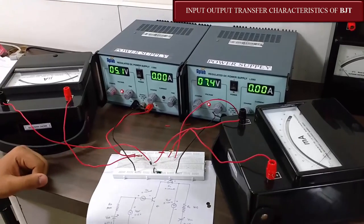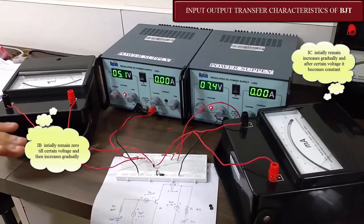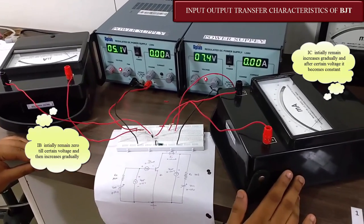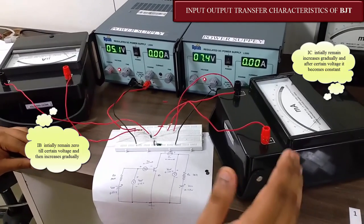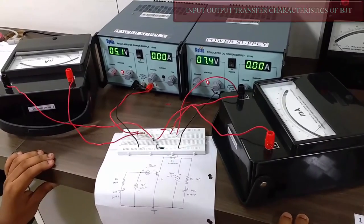In this experiment we have observed that the current IB remains zero but increases gradually after certain voltage. And the current IC firstly increases gradually then becomes constant. That's it for the input output transfer function of BJT.